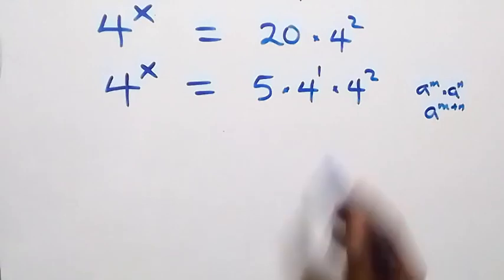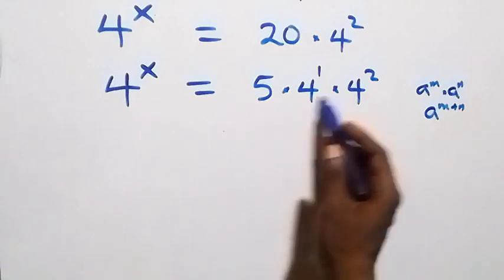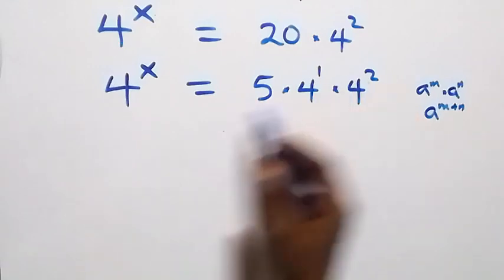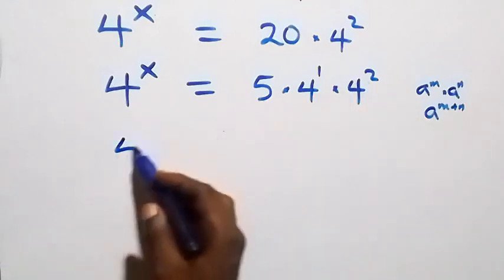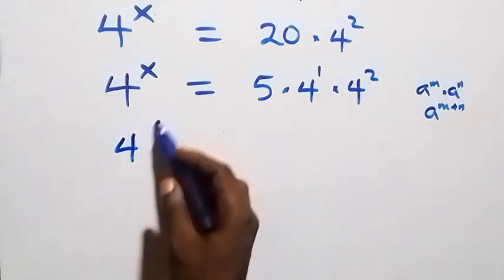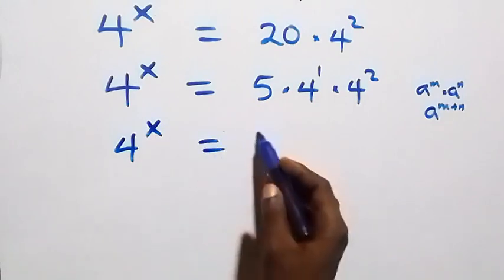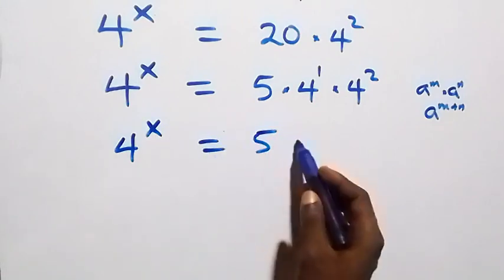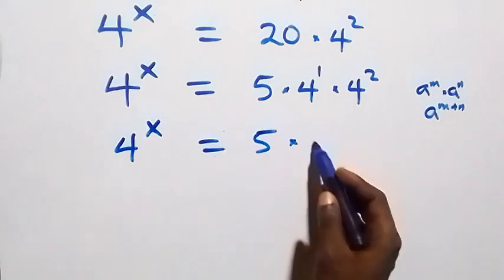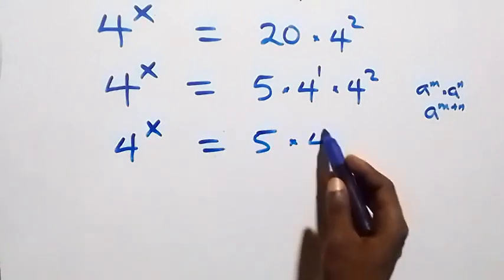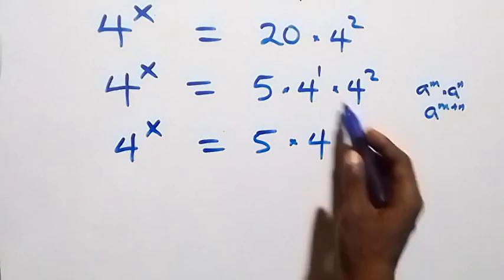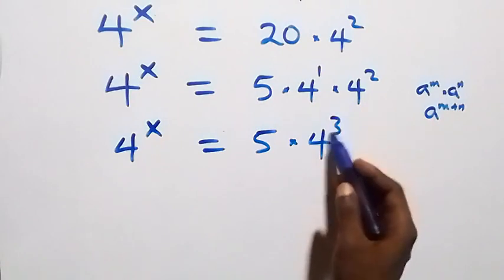When we add the powers — since a raised to power m times a raised to power n equals a raised to power m plus n — we get 4 raised to power x equals 5 times 4 raised to power 3.